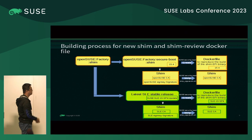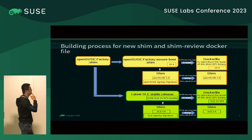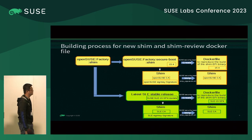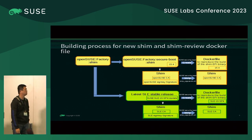The green color — the SLES path — is similar. It's based on the latest stable release, currently 15 SP4. The SHIM has the SLES CA embedded and is attached with the SLES sign key signature. We also need to strip the signature before sending it upstream.